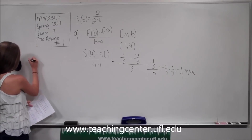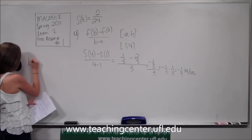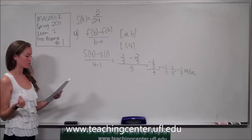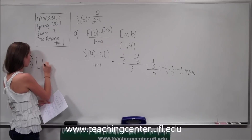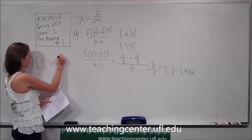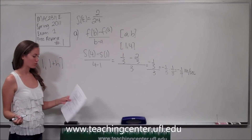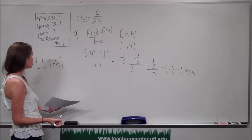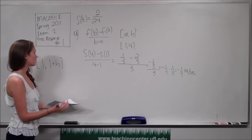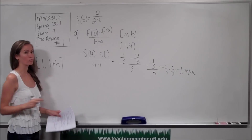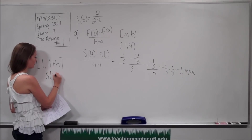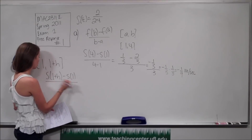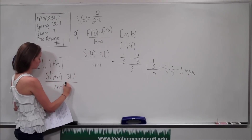For part b, they want us to write a formula for the average velocity of the object on the interval 1 to 1 plus h, for h not equal to 0, and to simplify the answer. We're going to do the same thing here but instead of using 4 and 1 we're going to be using 1 and 1 plus h. So it's going to be s of 1 plus h minus s of 1 all over 1 plus h minus 1.